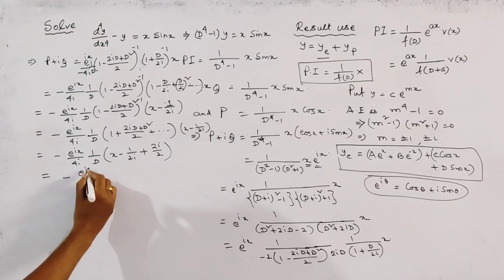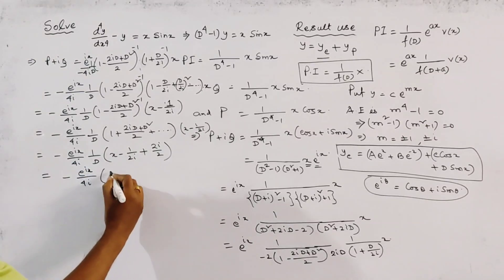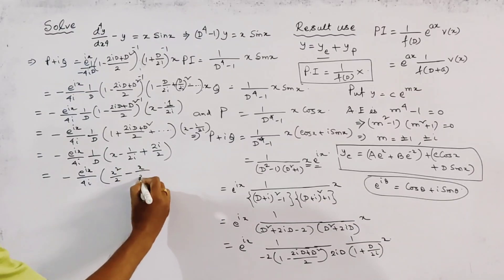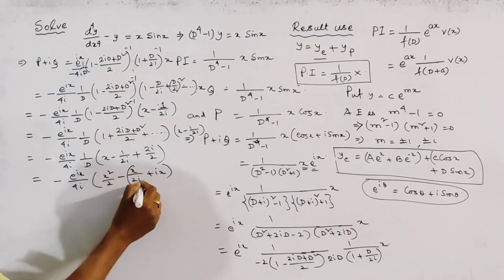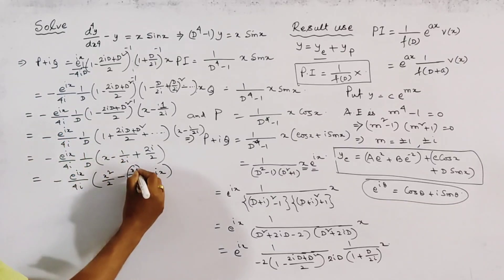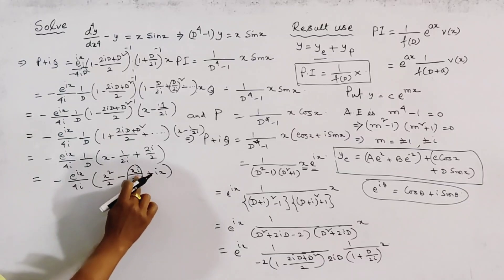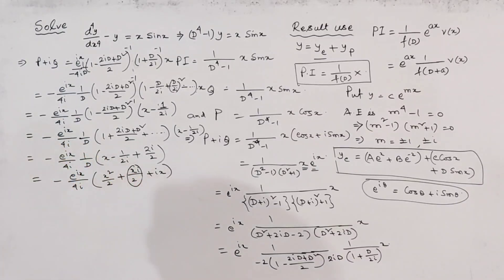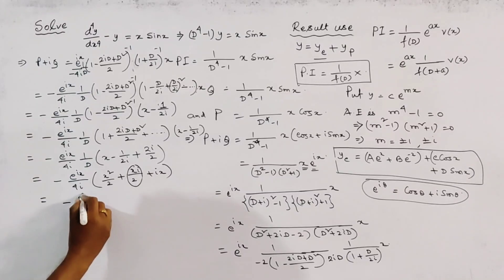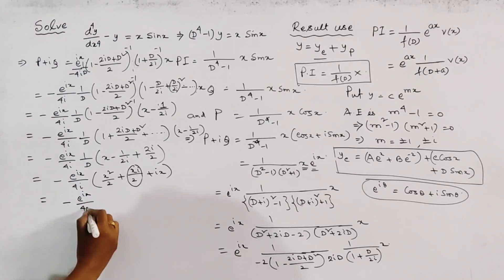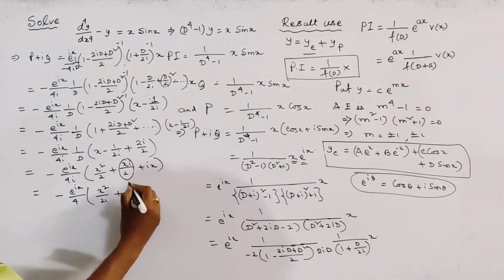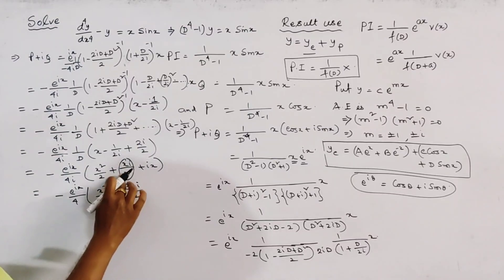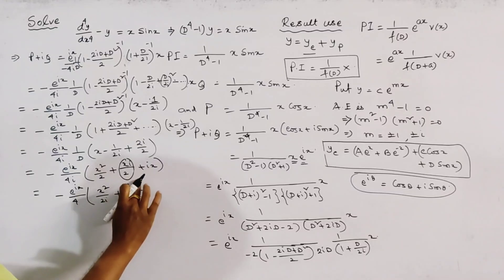After integration, we obtain −e^(ix) over (4i) times [x^2/2 − x/(2i) + ix]. Multiplying numerator and denominator by i (noting i^2 = −1), and taking common factor 2, we rewrite as e^(ix) over 4 times [x^2/2·i + 3x/2], simplifying to e^(ix) over 8 times (3x − ix^2).